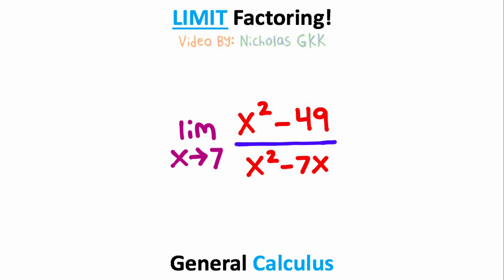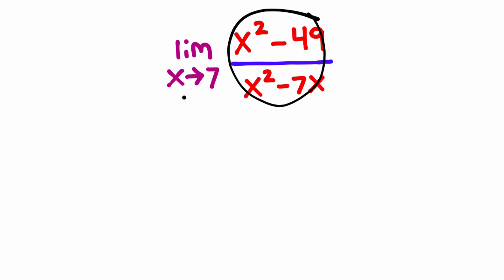In this calculus problem, we want to find the limit of this function as x approaches 7. Now what I notice first is we have x squared minus 49 in the numerator of this fraction. 49 is the same thing as 7 squared, because 7 times 7 is 49.